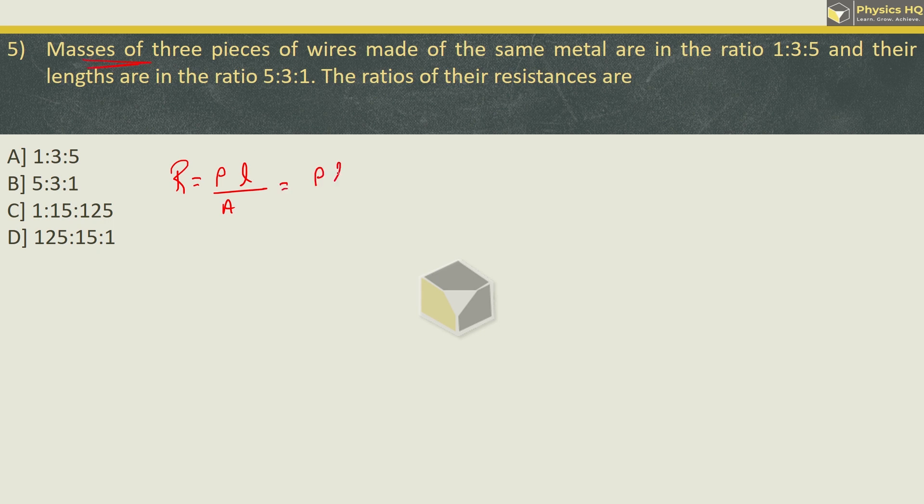But here they've talked about mass as well. So to bring mass in, we will multiply numerator and denominator by length. This becomes A into L. Area into length will be volume. And we know that density equals mass upon volume. Or you can say volume is mass upon density. So this will be rho L square, volume I will write as mass upon density. Denominator can be taken to numerator. From this, what we can say: resistance is directly proportional to length square and inversely proportional to mass.